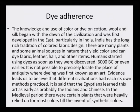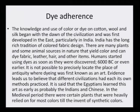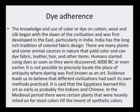The knowledge and use of color or dye on cotton, wool and silk began with the dawn of civilization and was first developed in the east, particularly in India. India has a long rich tradition of colored fabric design. There are many plants and some animal sources in nature that yield color and can dye fabric, leather, hair and other items. Humans started using dyes as soon as they were discovered — 6000 BC or even earlier. It is not possible to precisely locate the place of antiquity where dyeing was first known as an art. Evidence leads us to believe that different civilizations had each its own methods to be practiced.